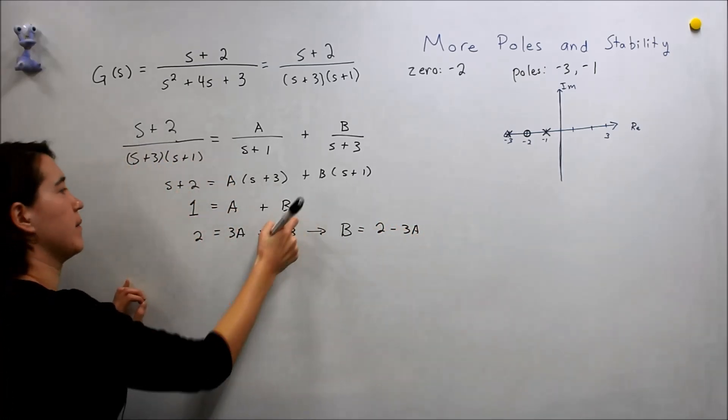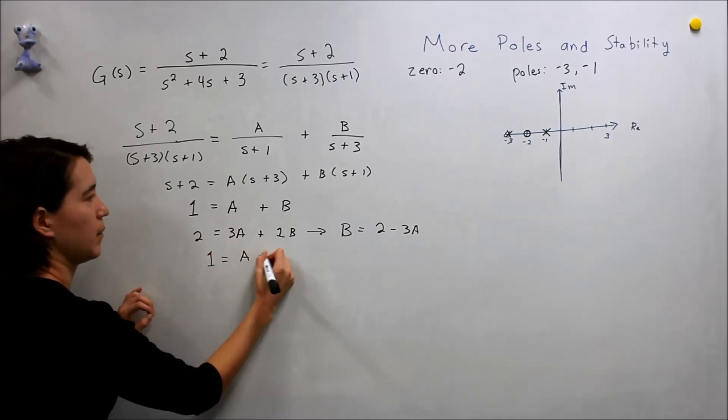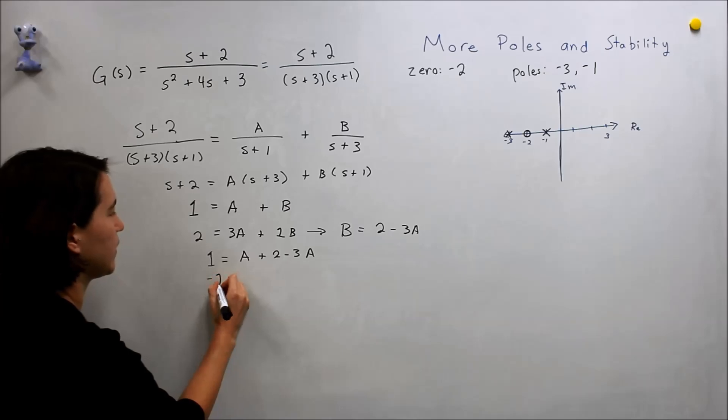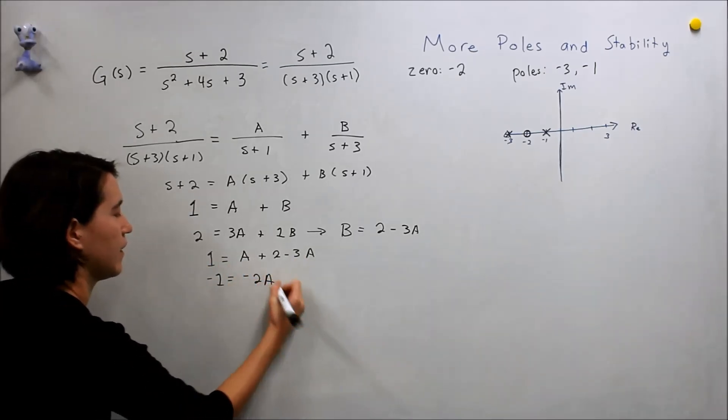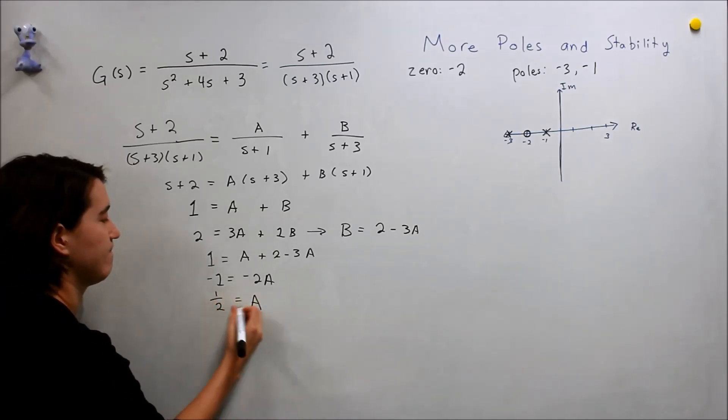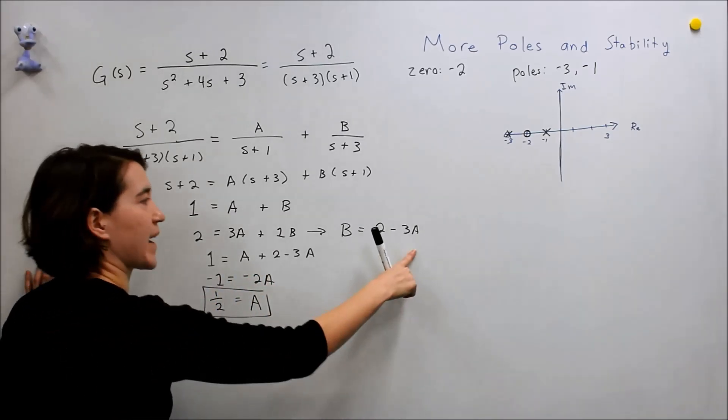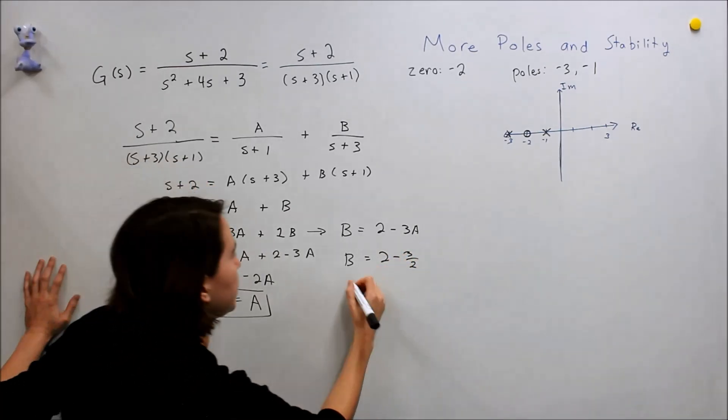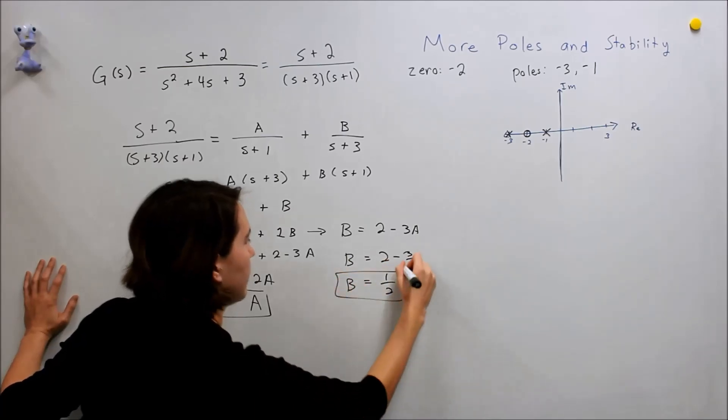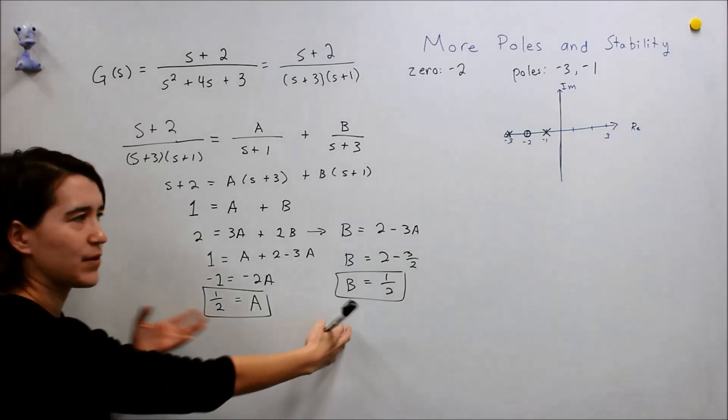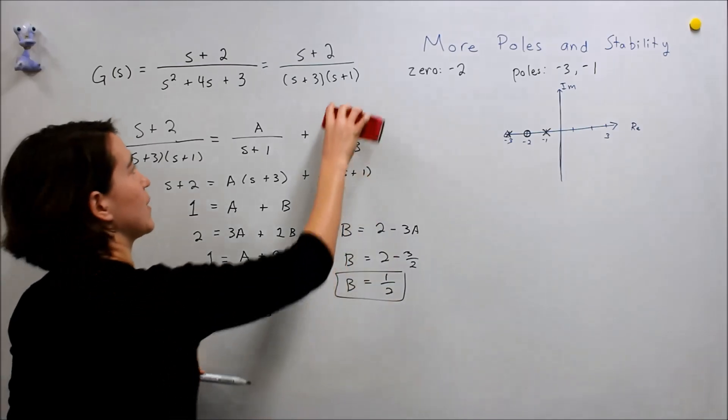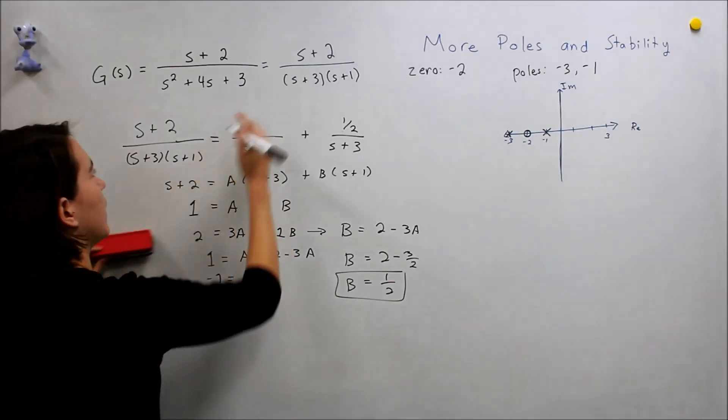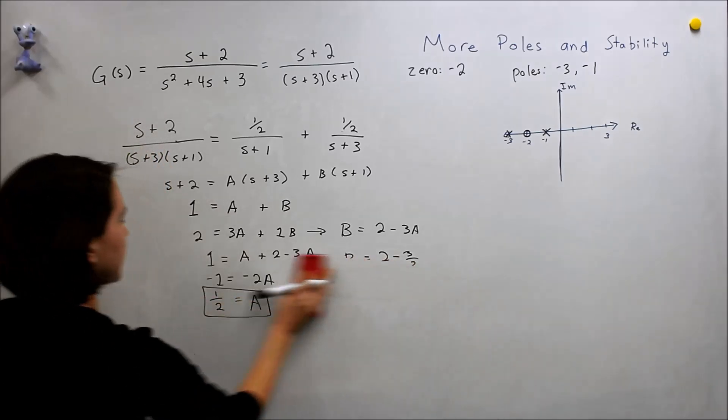If we rewrite this expression, b is equal to 2 minus 3a. We'll take that and plug it in here. We'll get 1 equals a plus 2 minus 3a. Move all these things around, we'll get negative 1 here when we move the 2 over. Add these together, we'll get negative 2a. Divide, and we get a is equal to 1 half. There's our value for a. Plug that back into here: 2 minus 3 over 2, and that also yields 1 half. We've found our values here, happen to both be 1 half. We can plug them back into here, and we know that these expressions are equal.